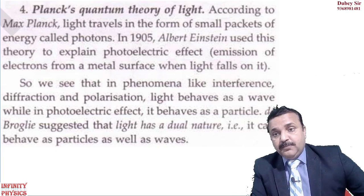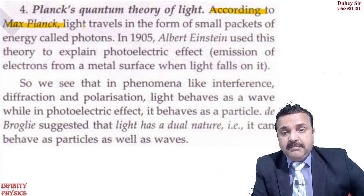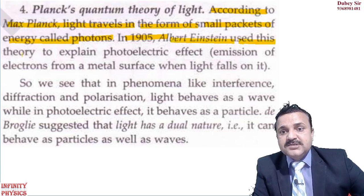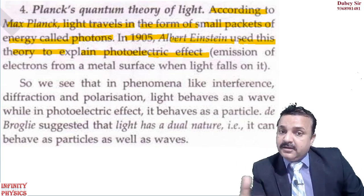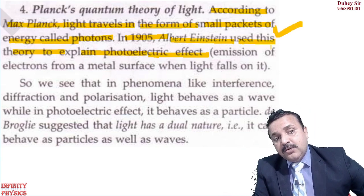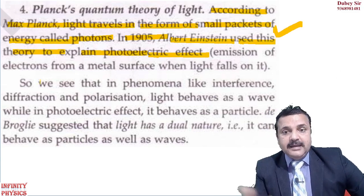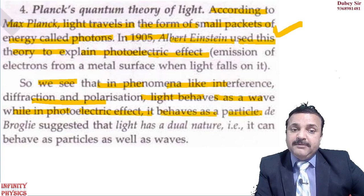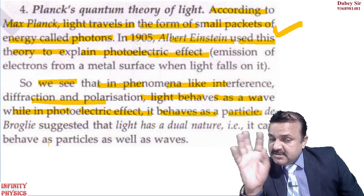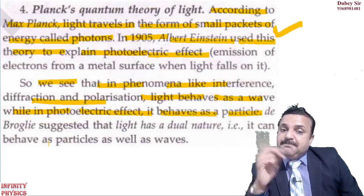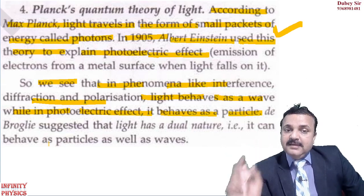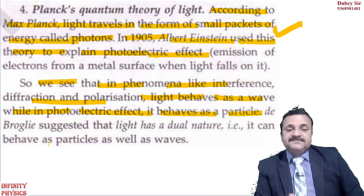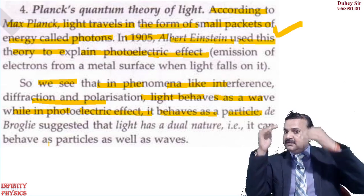According to Maxwell Planck, light travels in the form of small packets of energy called photons. In 1905, Albert Einstein used this theory to explain the photoelectric effect. We see that phenomena like interference, diffraction, and polarization show light behaves as a wave, while in the photoelectric effect it behaves as a particle. De Broglie resolved this contradiction by saying light has a dual nature — both particle nature and wave nature — called the dual nature of light.